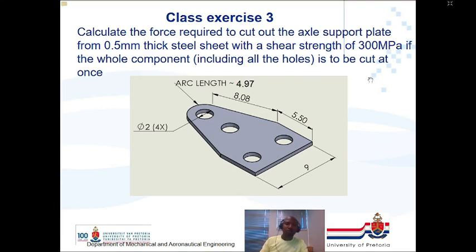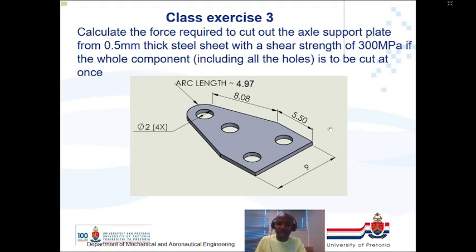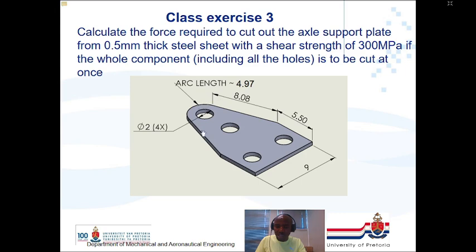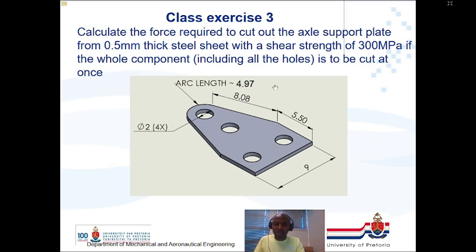Class exercise three: Calculate the force required to cut out an axle support plate from 0.5 mm thick steel sheet with shear strength of 300 MPa, if the whole component including all holes is cut at once. The outer cut is blanking and the inner cuts are punching; the forces are added together. The answer will be discussed in the consultation class. That was everything for sheet metal working one; bending and drawing will be covered in sheet metal working two.